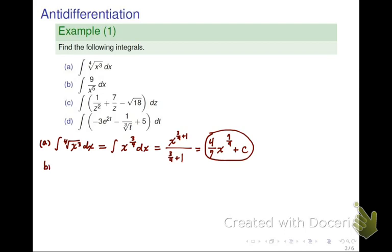For part B, we proceed with a similar process. Integration of 9 over x to the fifth dx. Don't forget to write dx because that is the differential variable that we are integrating with respect to. The first thing we do is pull out the coefficient 9 and rewrite it as 9 integral of x to the negative 5.